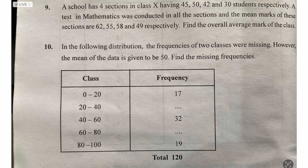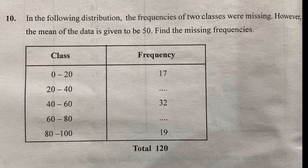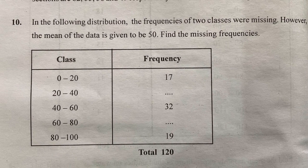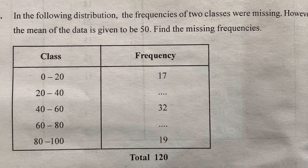We are doing Exercise 13.1, Question 10. In the following distribution, the frequency of two classes is missing. However, the mean of the data is given to be 50. The classes are: 0–20 (frequency 17), 20–40 (not given), 40–60 (frequency 32), 60–80 (not given), and 80–100 (frequency 19). The total frequency is given to be 120.